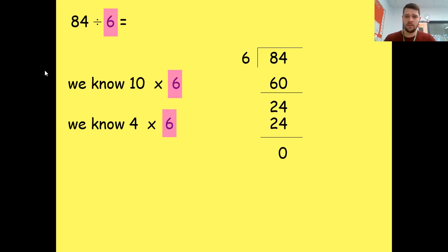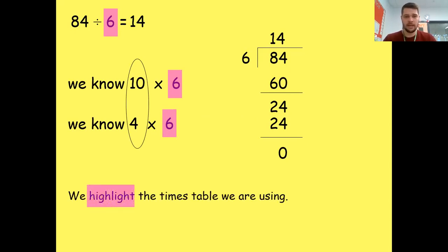24 take away 24 is zero. Perfect. So how many groups have I used overall? Let's circle them. 10 and four, 14. 84 divided by six equals 14. Again, we've highlighted our times tables that we're using, and we're circling the number of groups. So we're actually using our times tables to calculate our division question. Let's do another one. Again, feel free to draw this out and do it as I go along.